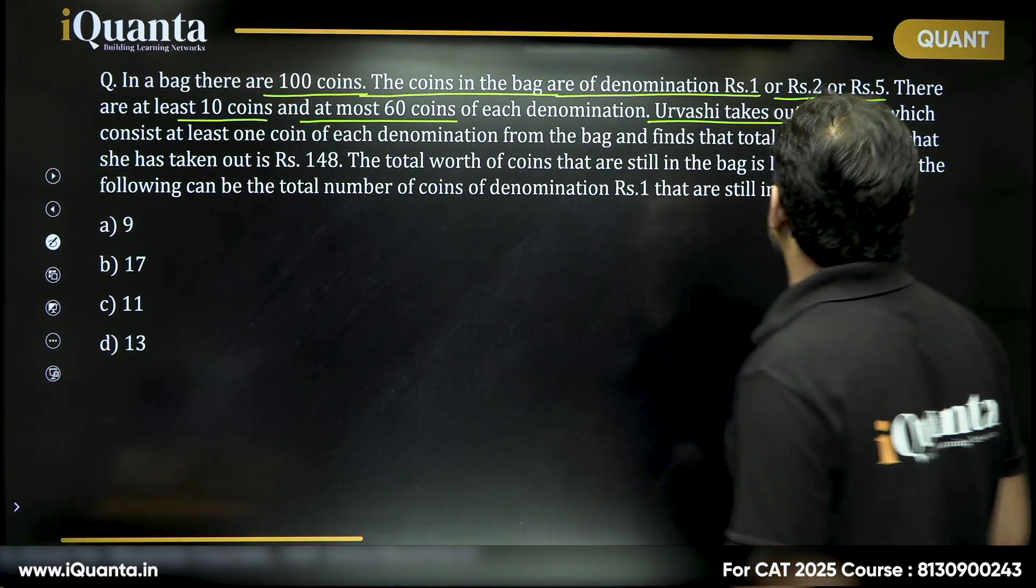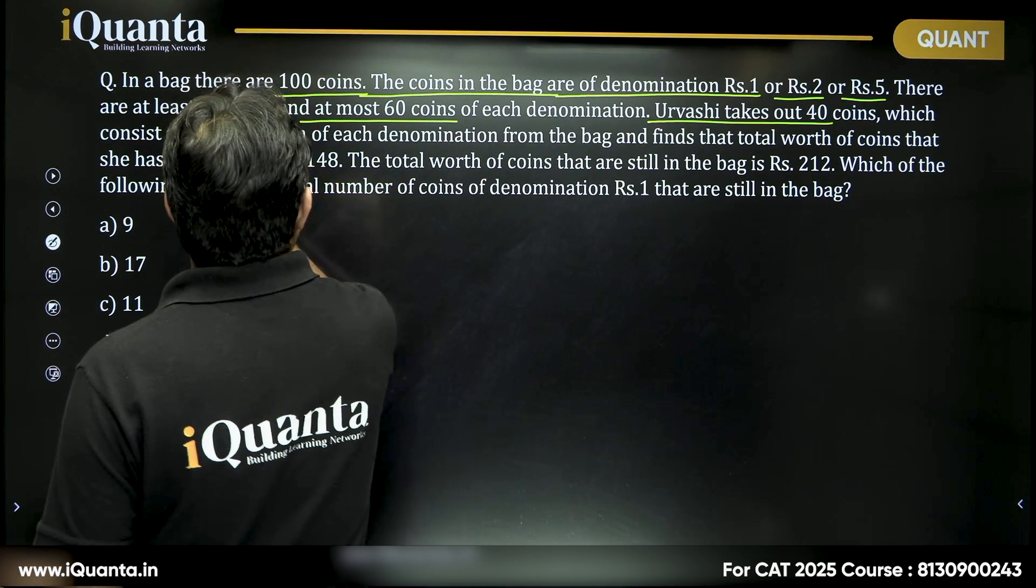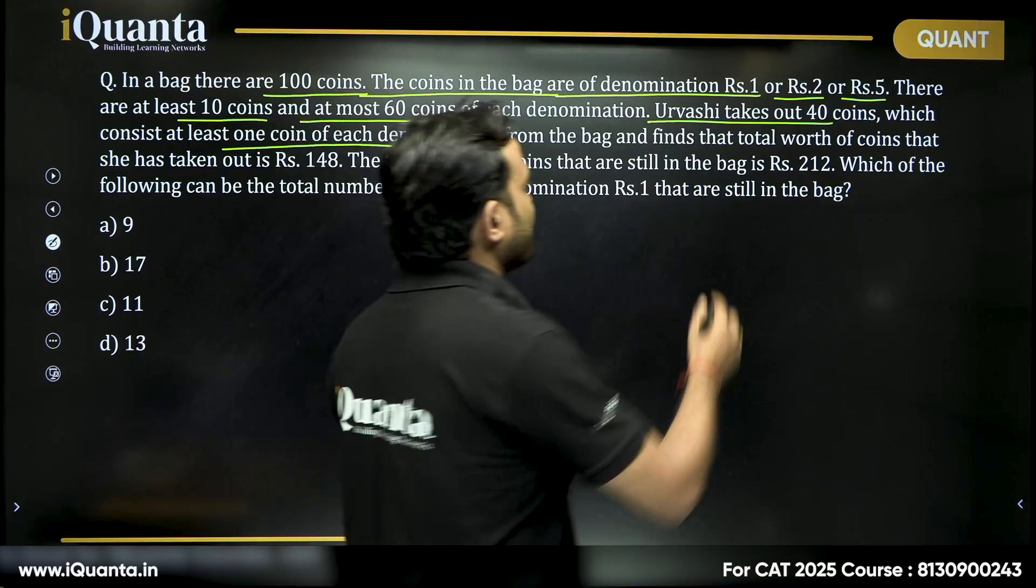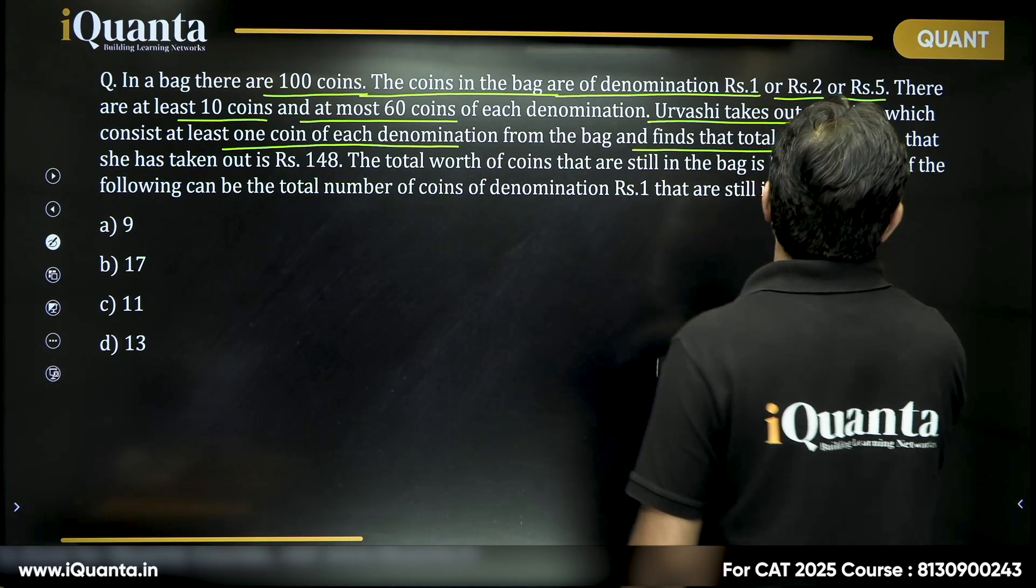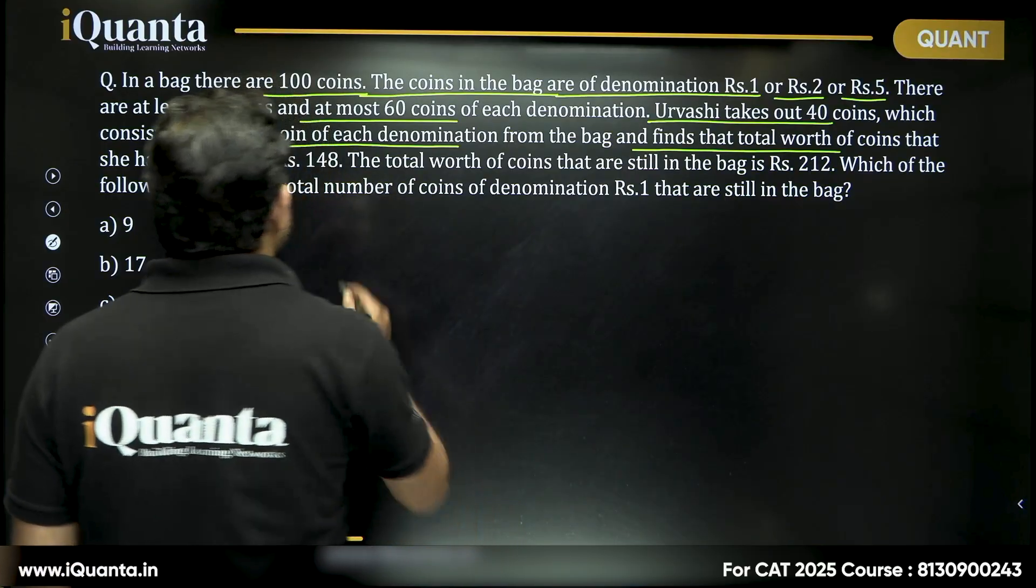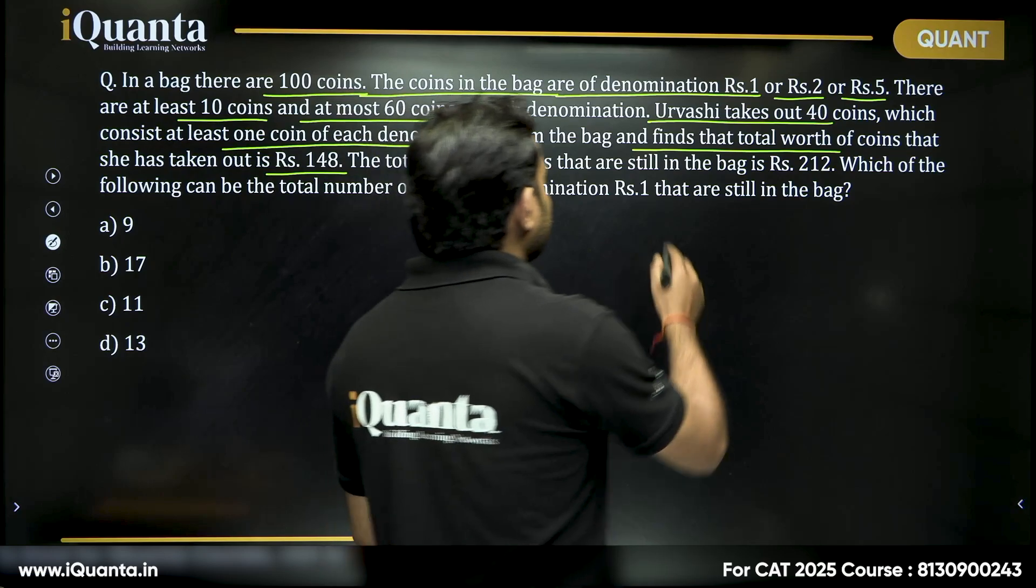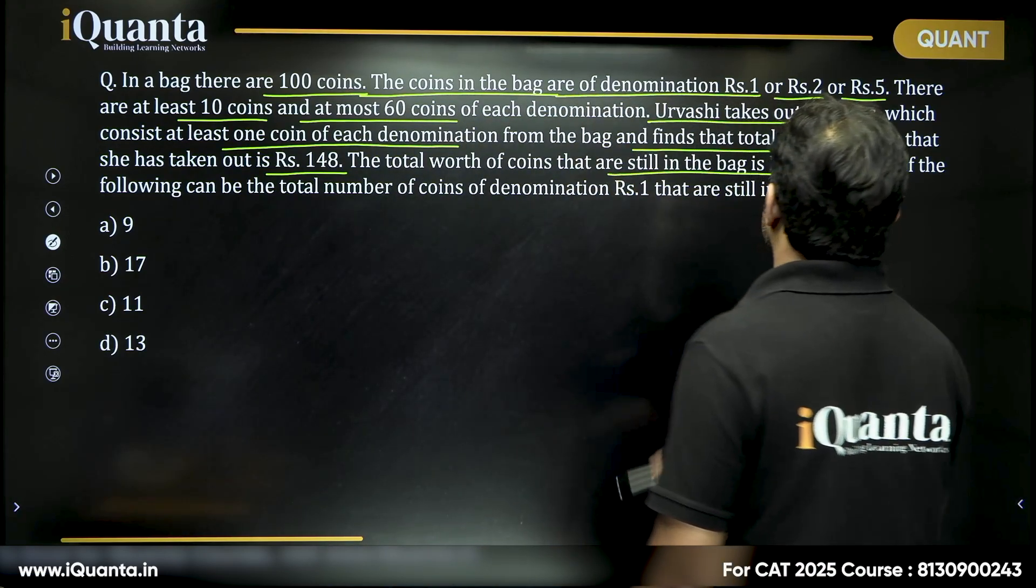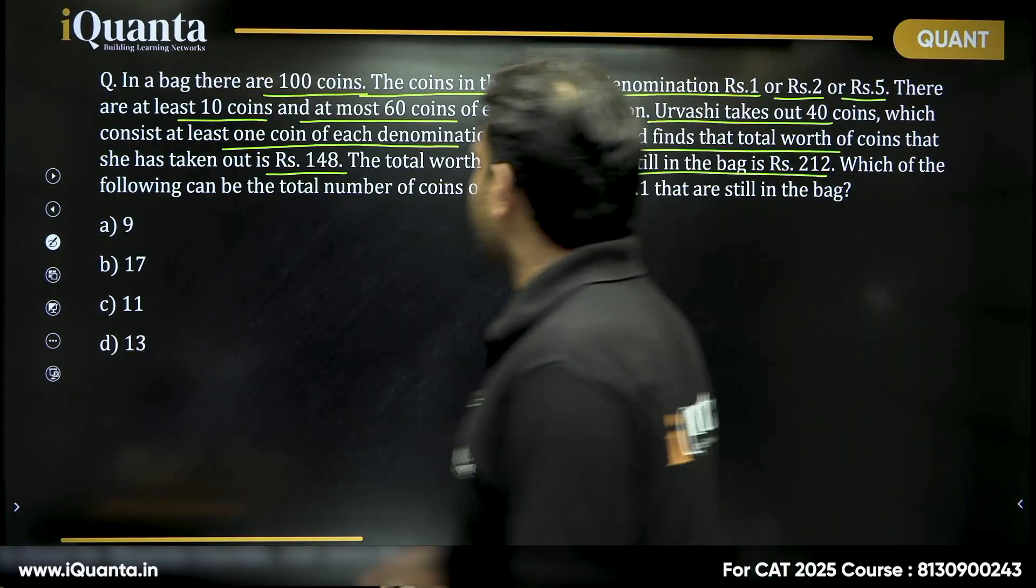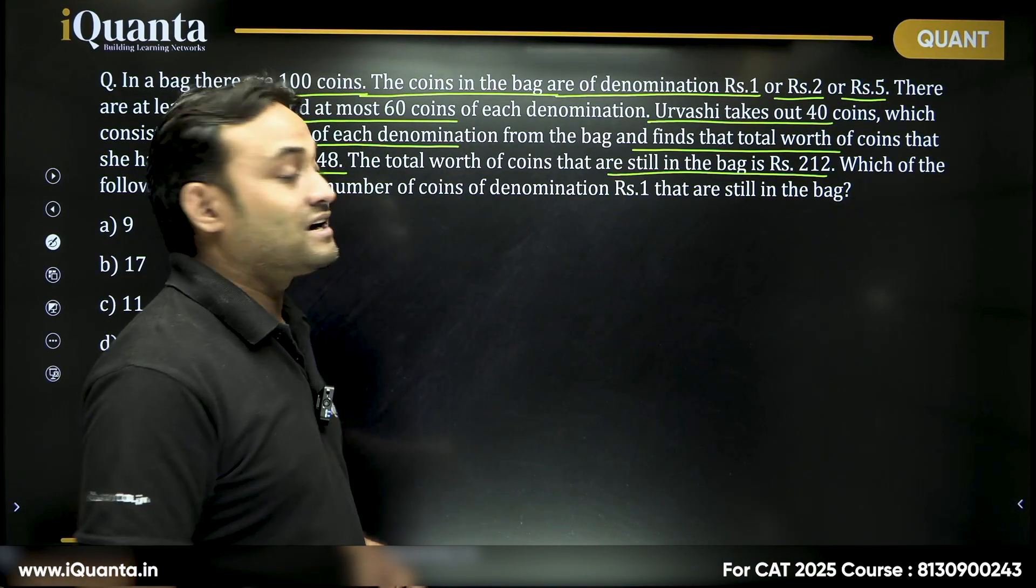Urvasi takes out 40 coins which consist at least one coin of each denomination from the bag and finds that the total worth of coins that she has taken out is 148 rupees. The total worth of coins that are still in the bag is 212. Which of the following can be the total number of coins of denomination rupees 1 that are still in the bag?